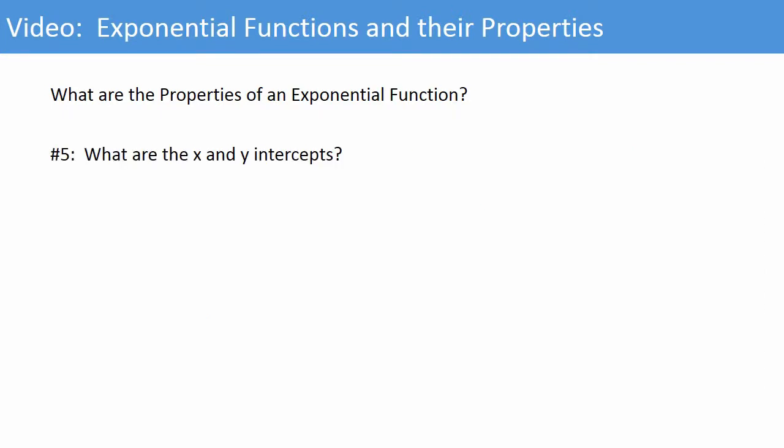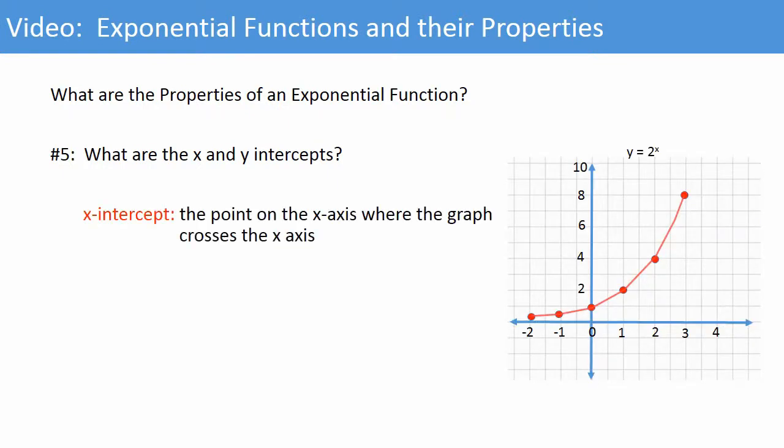What are the x and y intercepts? The x intercept is the point on the x axis where the graph crosses the x axis. But, since the graph does not cross the x axis, there is no x intercept.